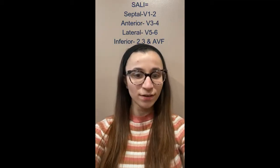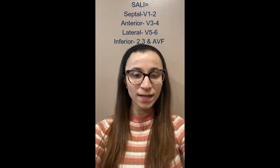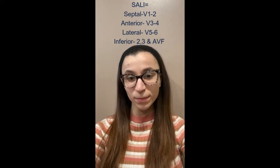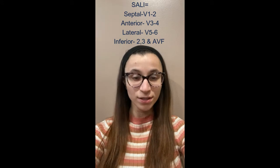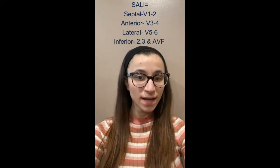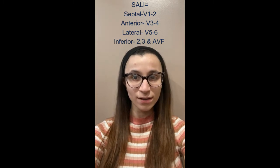The first mnemonic is going to be with cardiac: SALI, Sally. That stands for S - septal, A - anterior, L - lateral, and I - inferior. It goes basically in order. Septal is V1, V2. A for anterior is V3, V4. L for lateral is V5, V6.